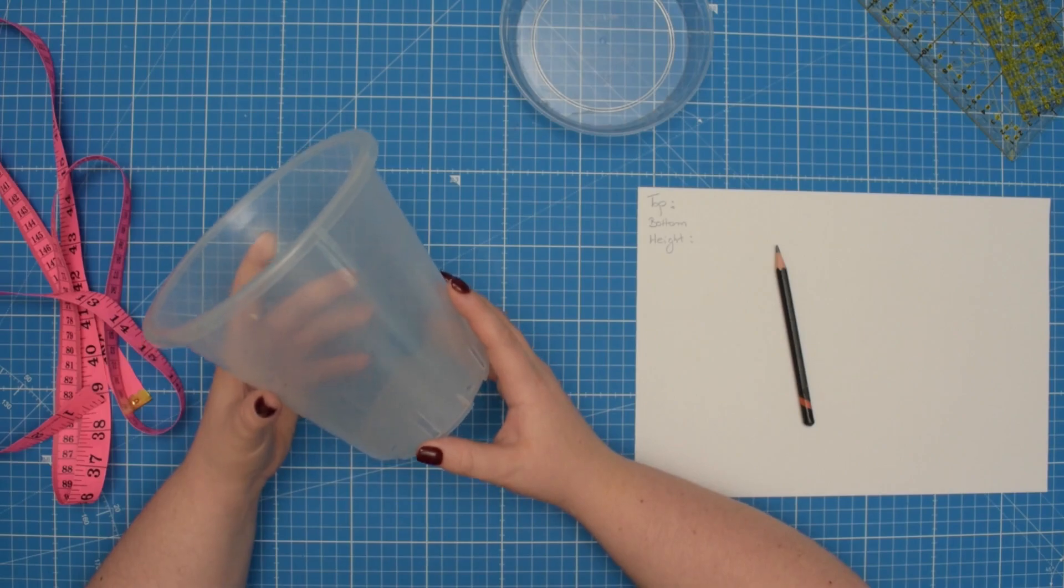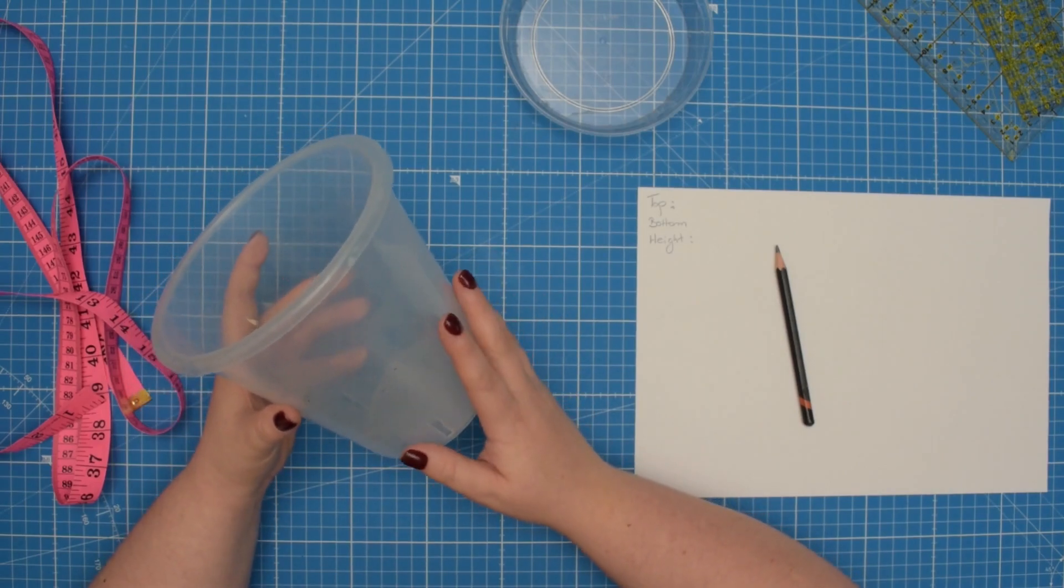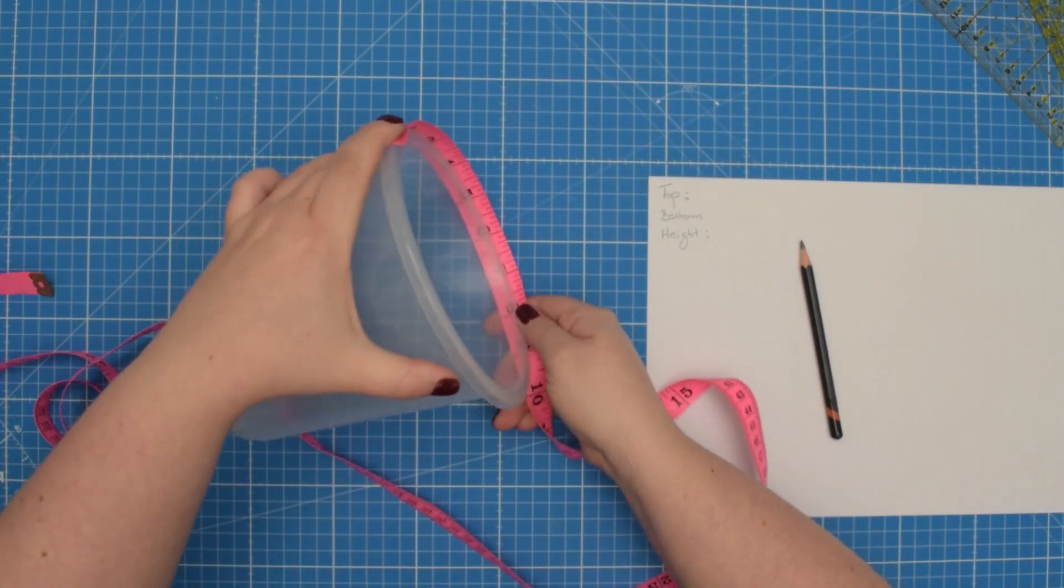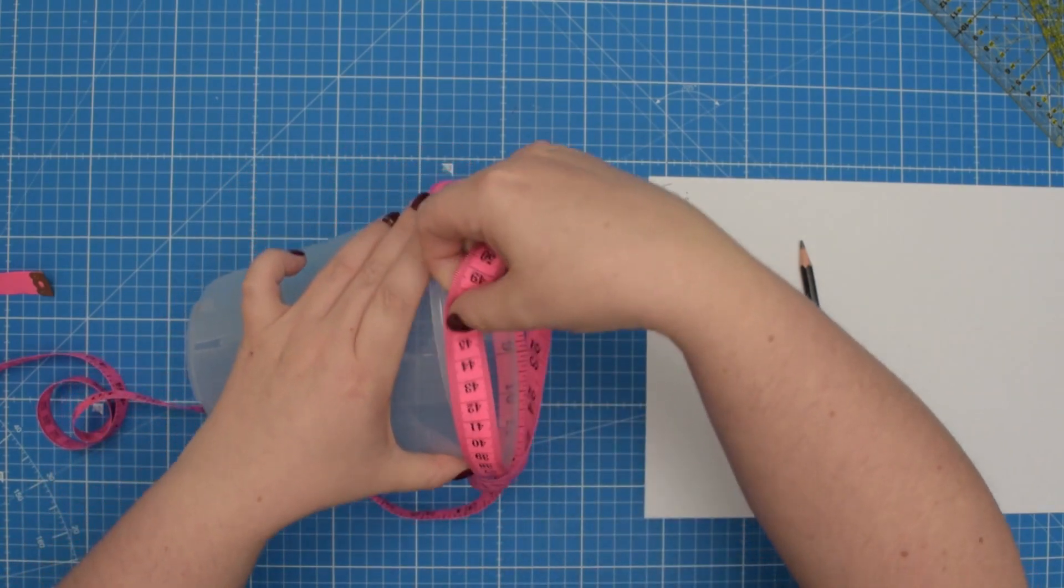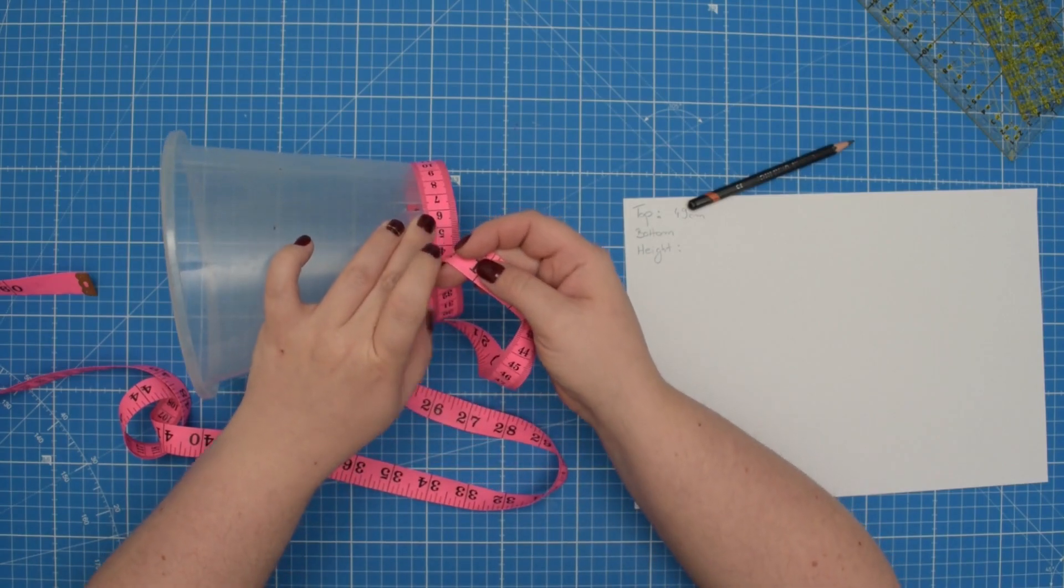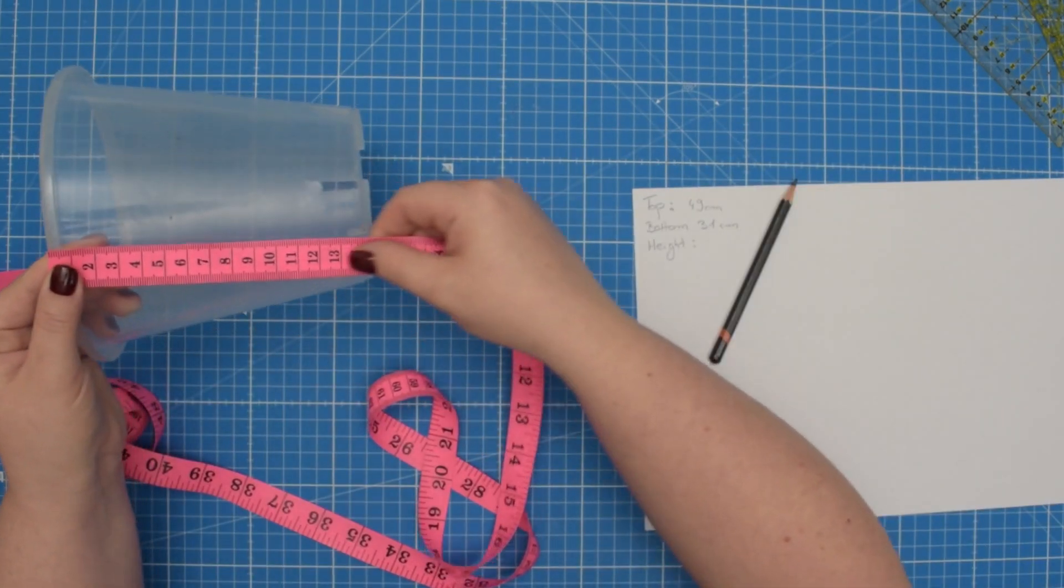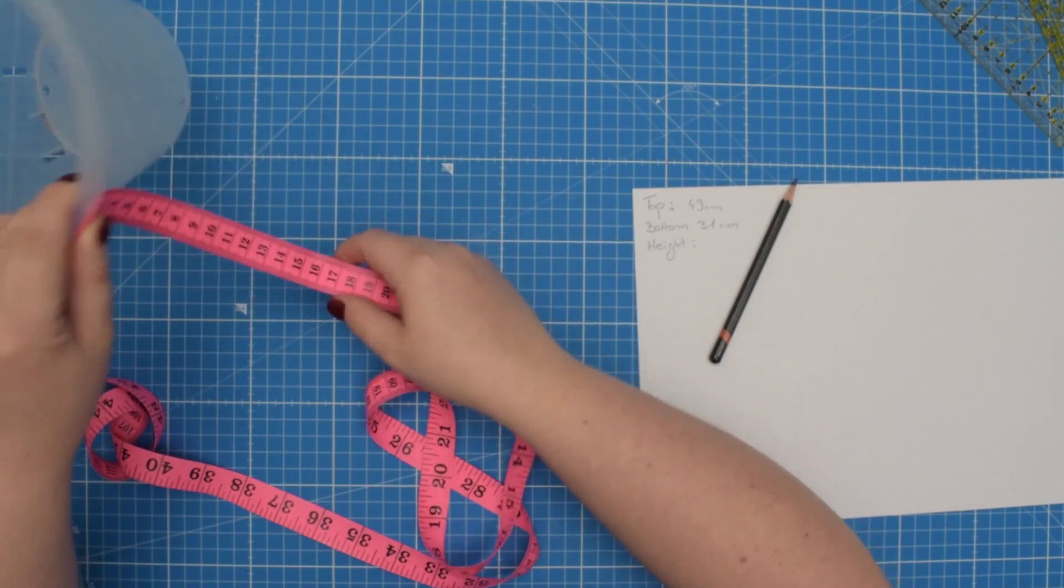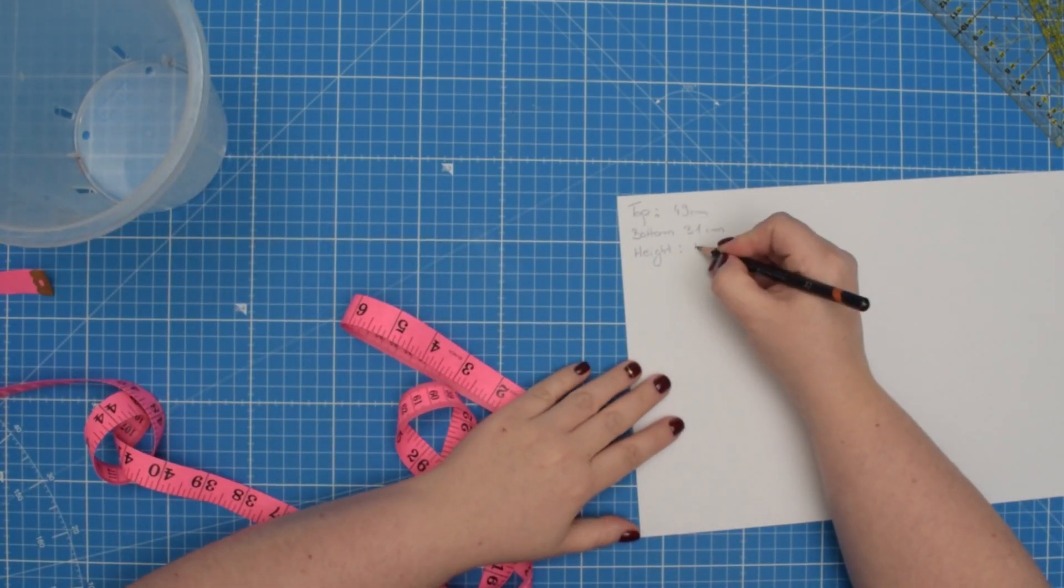To create a custom size flower pot cover you will need to take some measurements. First measure the circumference along the top of your pot, then measure the circumference along the bottom and also measure the height of your pot. Then write those measurements on a piece of paper.